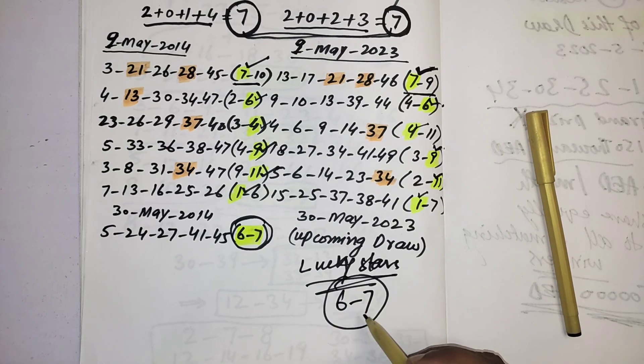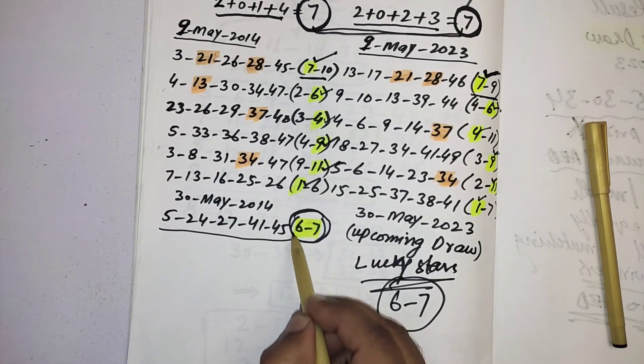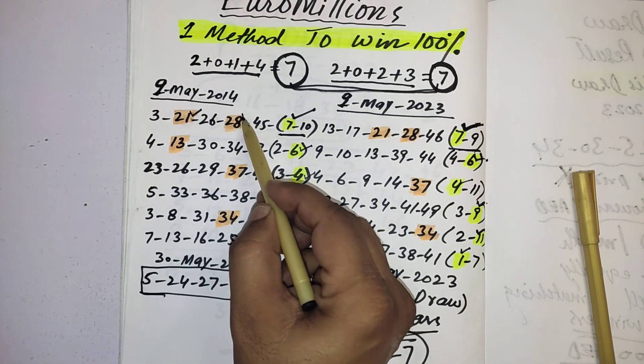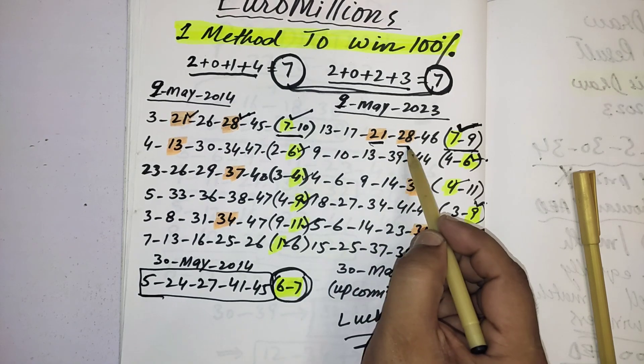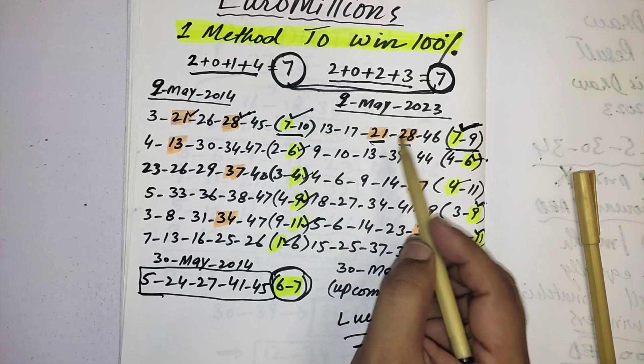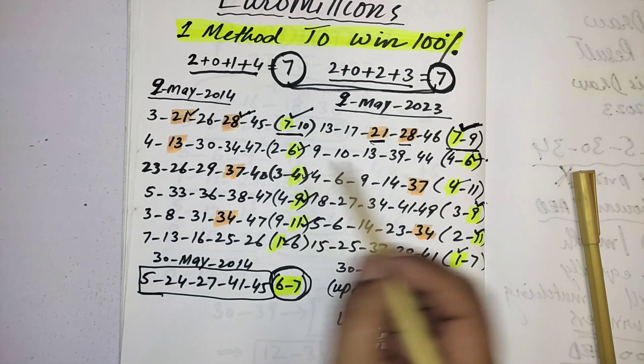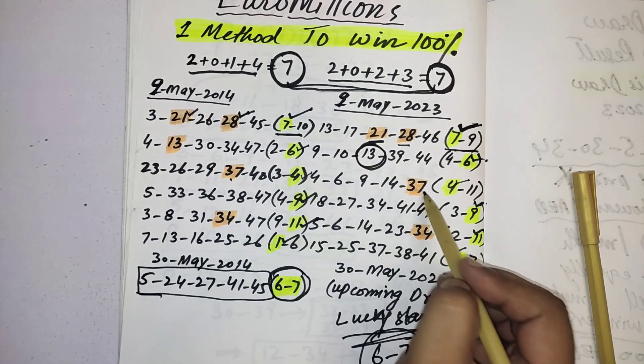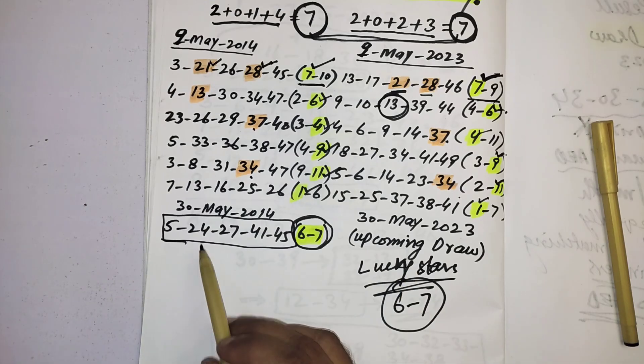You can also select from these numbers because you can see 21 and 28 came on 9th May 2014. Same, these two numbers came 9th May 2023: 21 and 28. Then second draw 13, here is also you can see 13, 37, 37, 34, 34. So you can also select your two or three numbers from these numbers.